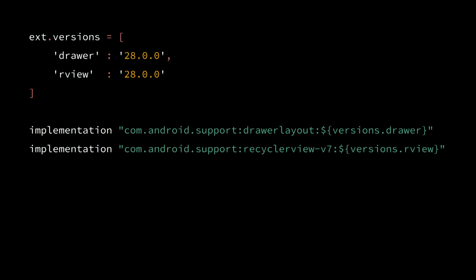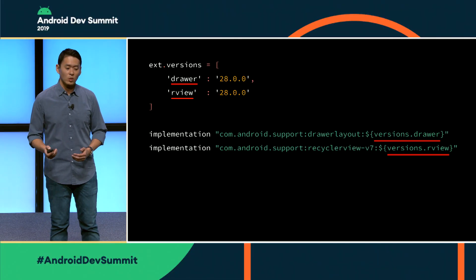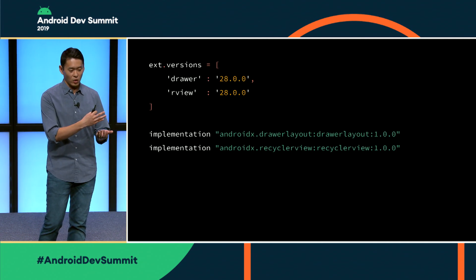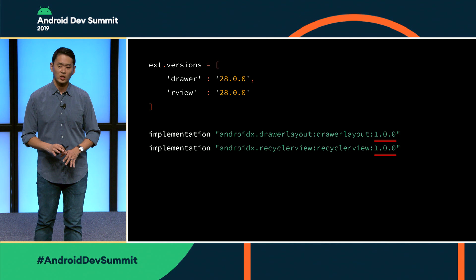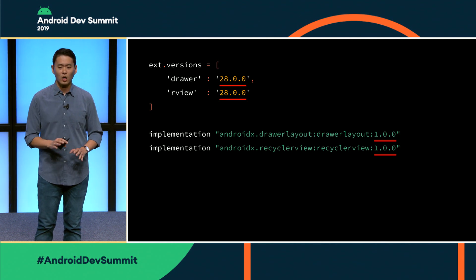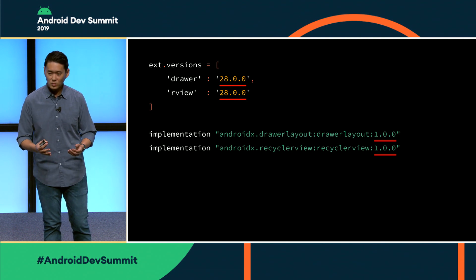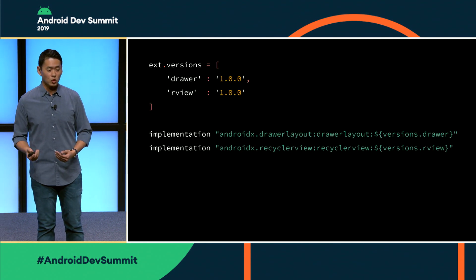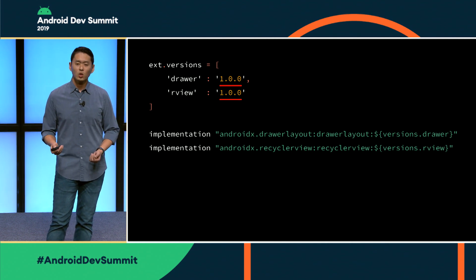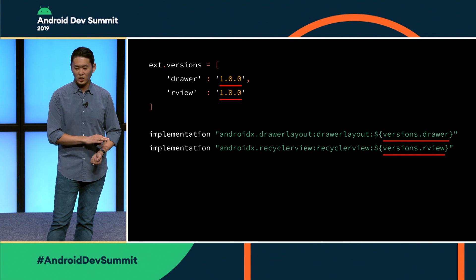Here is your build.gradle file prior to migration using the old Support Library, where version variables are extracted into their own separate section. After running the migration tool, drawer layout and recycler view now use the new AndroidX packages, but the version numbers are now inlined and the variable names are not yet changed — the tool does not modify this. You'll need to manually update the drawer and recycler view versions to 1.0 and inline those variables back in.